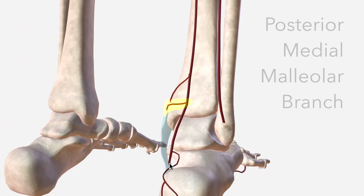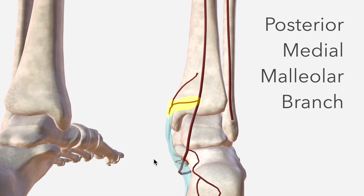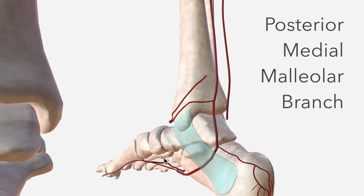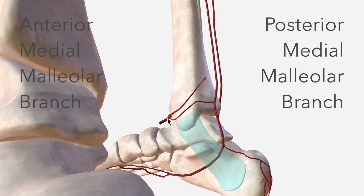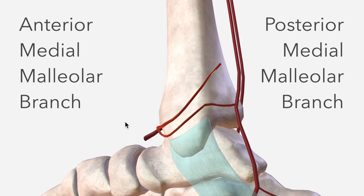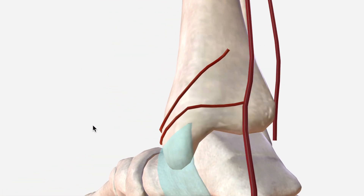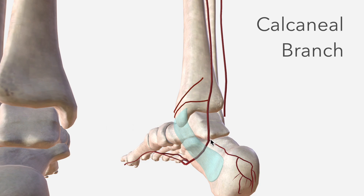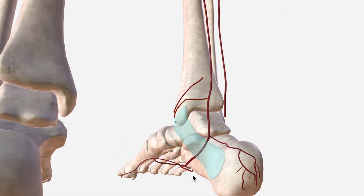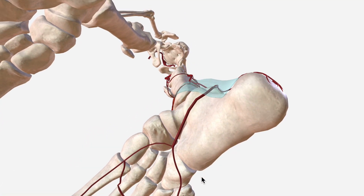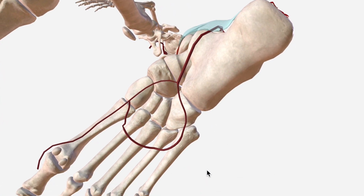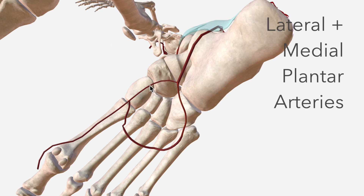We then have a posterior medial malleolar branch, which anastomoses with the anterior medial malleolar branch coming from the anterior tibial artery. We have a calcaneal branch around the back here, supplying the calcaneum and the skin across the heel. And then lastly, we have our terminal bifurcation into lateral and medial plantar arteries, supplying the plantar surface of the foot.